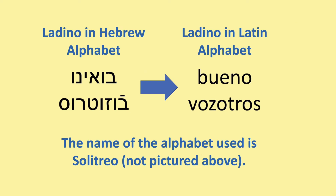Before, Ladino was written in the Hebrew alphabet; today it's also written in the Latin alphabet. The name of the alphabet used is Solitreo. In Ladino, the written H is always pronounced, like the H in English.